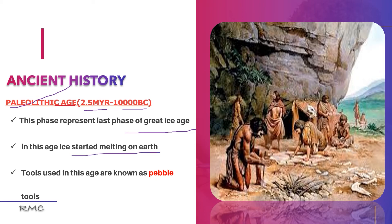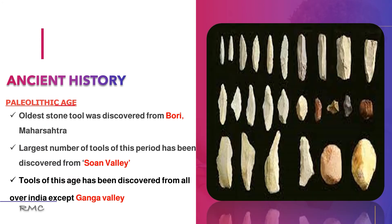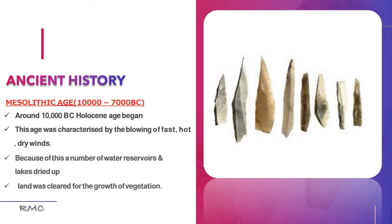In this age, ice started melting on Earth. Tools used were known as pebble tools. The tools used by people of this period include hand axes, cleavers, and chopping choppers. The oldest stone tool was discovered from Bori, Maharashtra. A large number of tools of this period have been discovered from all over India except the Ganga valley — the Gangetic valley has no Paleolithic tools discovered. This is very important from an examination point of view.